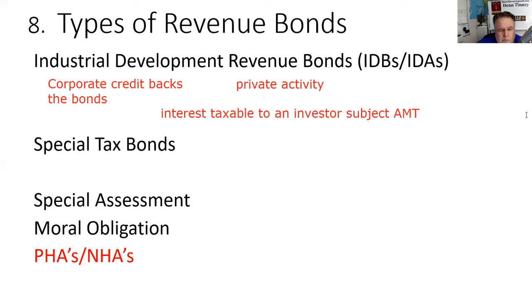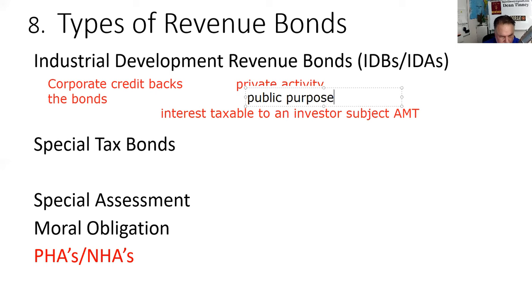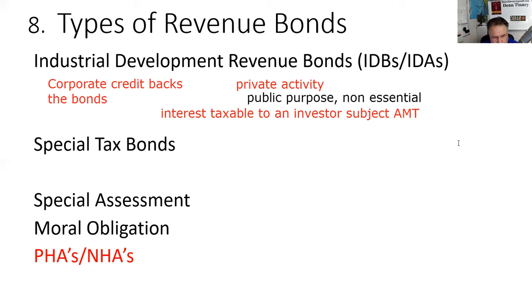If you're not subject to the AMT, this might be a good value proposition because many people shy away from these bonds. Another bond with the same tax implications is the public purpose non-essential bond — for example, a stadium. We just built the Raiders a new stadium in Las Vegas with public financing, and 50,000 people bonding over the Raiders losing another game is not an essential public purpose.